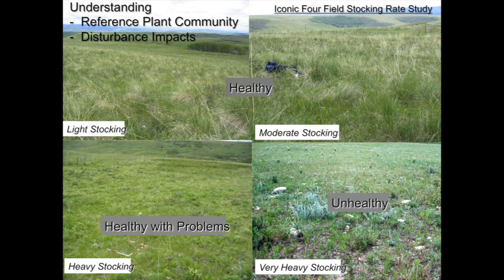In the upper left, we have a rough fescue Perry's oat grass community type in the foothills fescue grassland, on a loamy range site and on a Bezer soil. We also have three successional plant communities, the product of heavier rates of disturbance in grazing — moderate, heavy, and very heavy stocking.